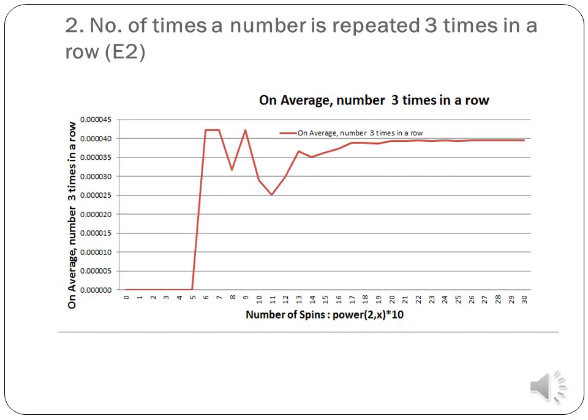Event 2: determining on average how many times a number is repeated three times in a row. The number of spins is given as input, and the program outputs how many times a number is repeated three times consecutively. For 1 billion spins, the output was 21,900, giving an average of 2.19×10⁻⁵. I simulated data points ranging from 10 spins to 20 billion; as shown in the graph, the output varied initially but after 100 million spins started closely matching the expected value of 0.00002.